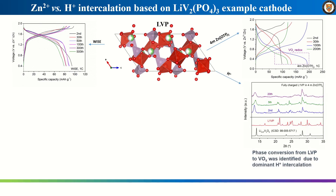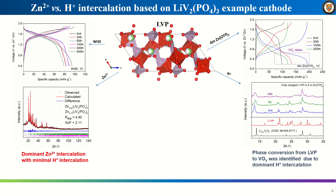The origin of such contrasting electrochemistry comes from the different structural evolution of LVP, which was investigated by XRD. As shown in this figure, a phase conversion from LVP to vanadium oxide was identified due to dominant proton intercalation. On the contrary, the LVP phase was sustained with little change when operating in the water-in-salt electrolyte. Rietveld refinement confirms the dominant zinc intercalation with minimum proton intercalation.